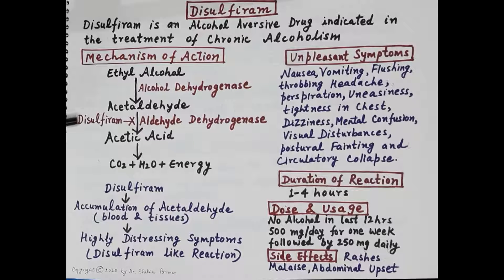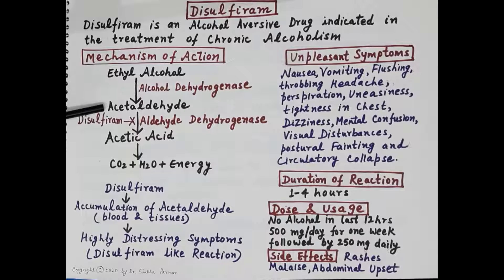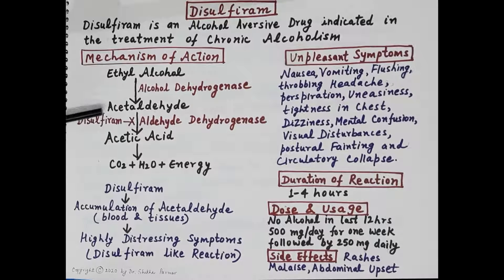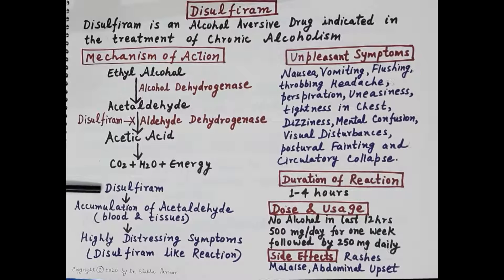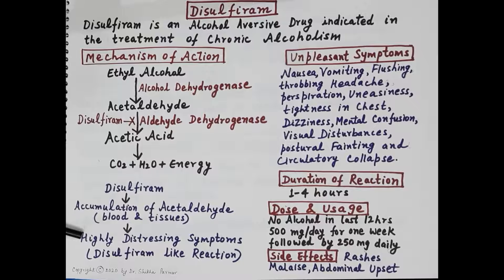Disulfiram inhibits the enzyme aldehyde dehydrogenase. By inhibiting aldehyde dehydrogenase, disulfiram inhibits the further metabolism of acetaldehyde. Since metabolism of acetaldehyde is inhibited, acetaldehyde accumulates in the blood and tissues, and this accumulation produces highly distressing symptoms — this is also termed the disulfiram-like reaction.